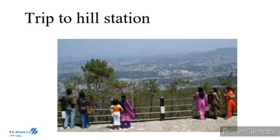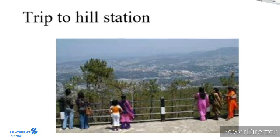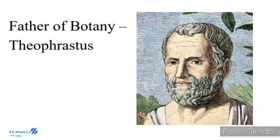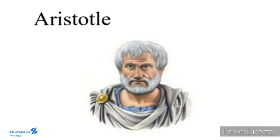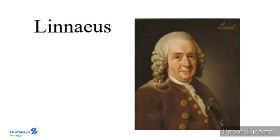Many attempts have been made in the past to classify the organisms on Earth. Theophrastus, the father of botany, used morphological characters to classify plants into trees, shrubs, and herbs. Aristotle classified animals into two groups: animals with red blood and animals without red blood. Carolus Linnaeus classified the living world into two groups, namely plants and animals, based on morphological characters.